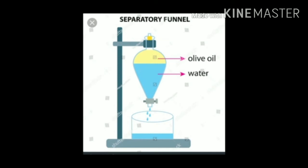Method 3: Separating a mixture of two immiscible liquids. Immiscible liquids can be separated using a separating funnel. Take a mixture of mustard oil or kerosene or olive oil in water, pour it into the separating funnel, and allow it to stand undisturbed until separate layers of oil and water form. Mustard oil forms the upper layer and water the lower layer. Open the stopcock of the separating funnel and pour the lower layer carefully into a beaker, then close the stopcock as the oil reaches down.